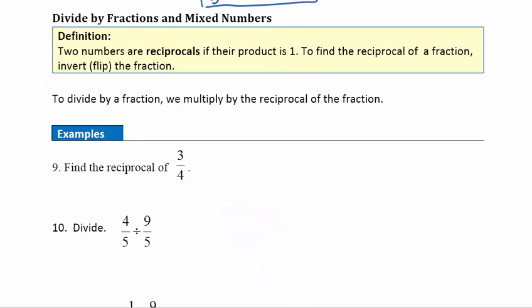Now let's look at dividing fractions and mixed numbers. Two numbers are reciprocals if their product is 1 — and remember, product means multiply. So if we take two reciprocals and multiply them together, we get 1. That's useful when we start solving equations.